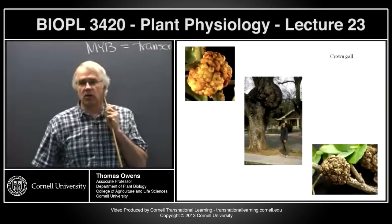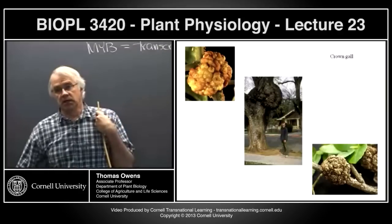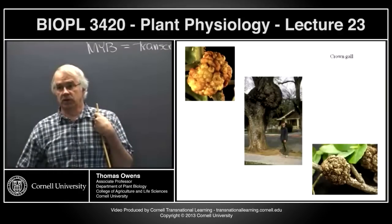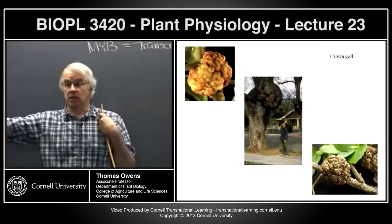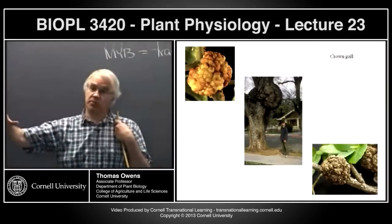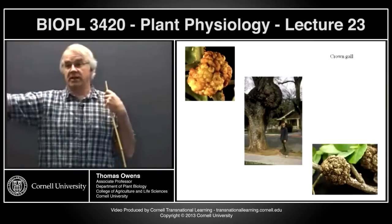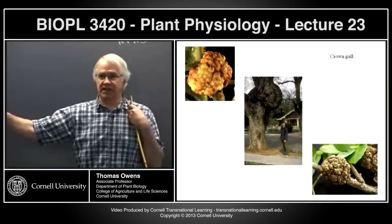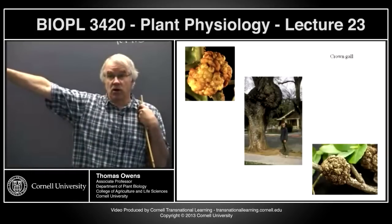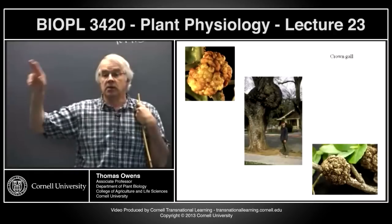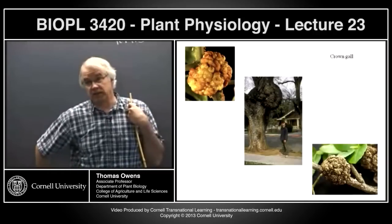A student asks if crown gall is similar to cancer in animals. In animals, cancer often involves loss of regulation of signal transduction pathways controlling cell division — for example, a mutation putting a normally-off protein in an always-on state. What's going on in crown gall is not related to mutations in proteins, but rather changes in expression — changes in synthesis of hormones that control those pathways.